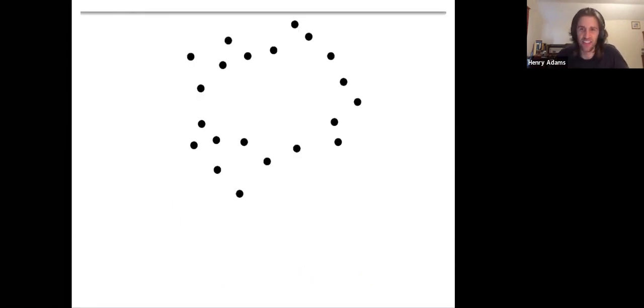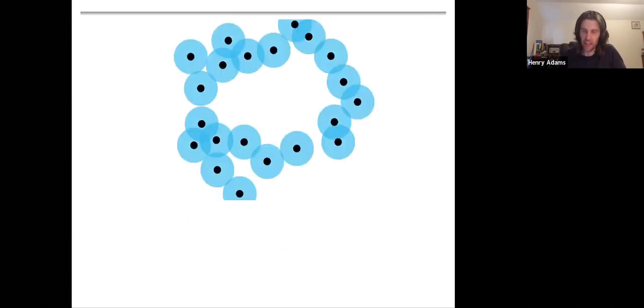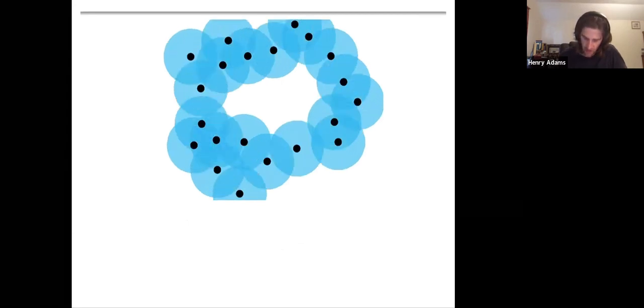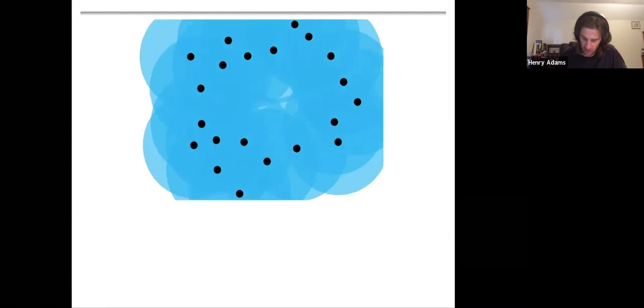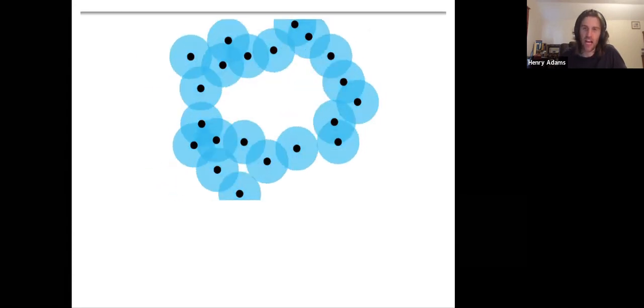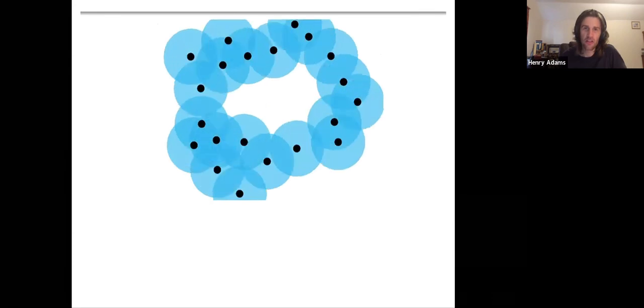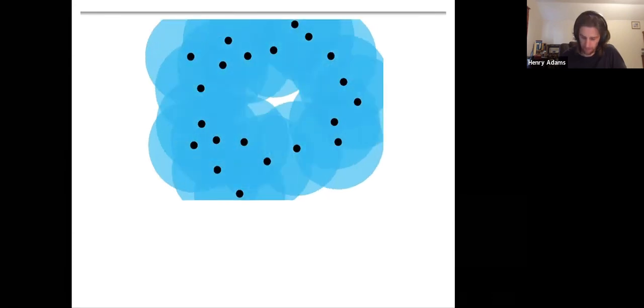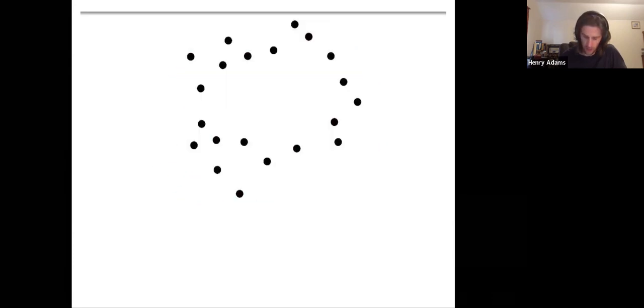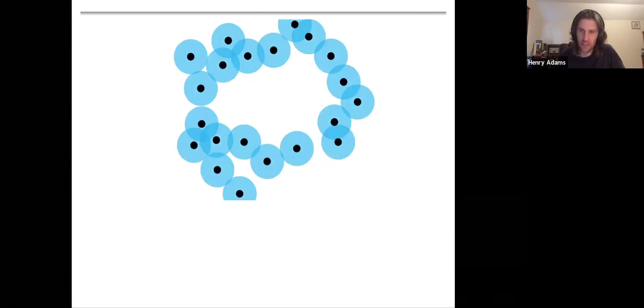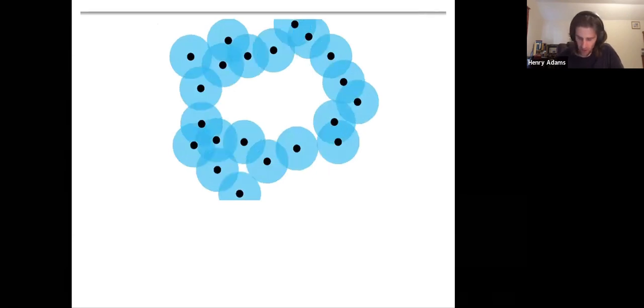A mathematical definition of blurring your vision might be to take each data point and grow a small ball around it. And then you could blur your vision to different degrees, right? How much do you want to blur your vision? There's no right answer.